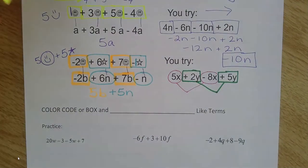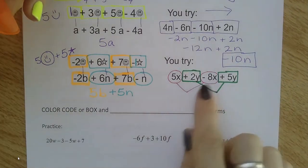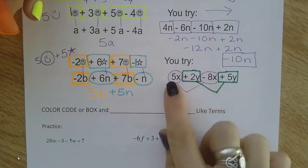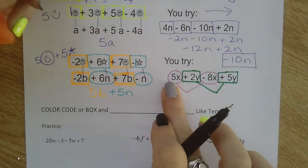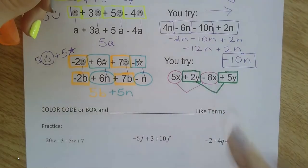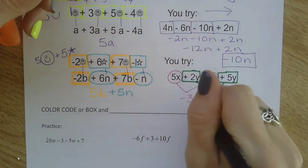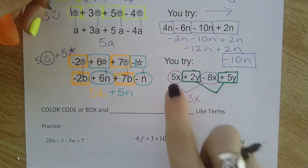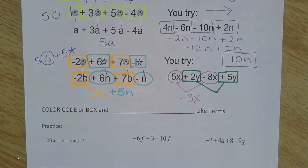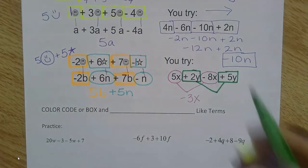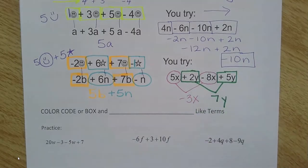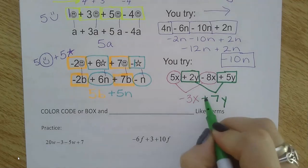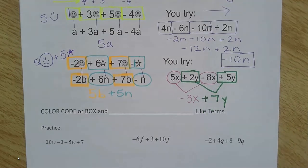If you're ready to check, you can see I've color coded. It doesn't matter if you circle, box, or highlight. We should be finding the x's that go together. Now I'm going to do 5 and negative 8 make negative 3 x's. When I put those together, 5 plus negative 8 is negative 3. And then 2 plus 5 makes 7 y's. If it's positive, put a plus sign there.